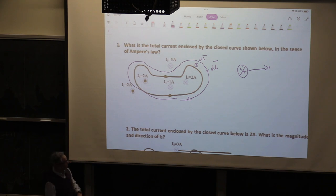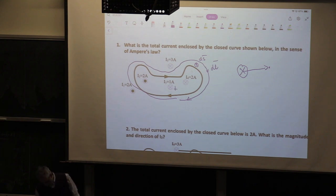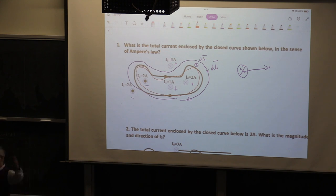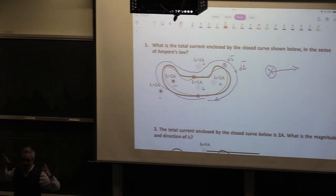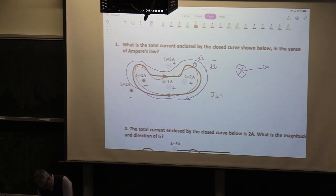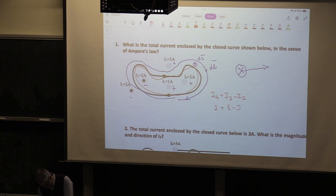We now calculate the enclosed currents, keeping in mind which is positive and which is negative. Some currents are positive, some are negative, but only those enclosed by the contour matter. With Ampere's Law, similar to Gauss's Law, currents outside the contour play no role. So we have I4 plus I3 minus I2. Putting in numbers: I4 is 2 amps, I3 is 1, minus 2 gives 1 amp. That is the enclosed current.